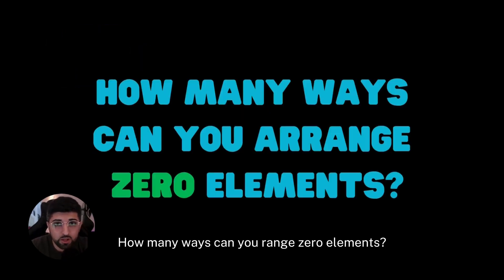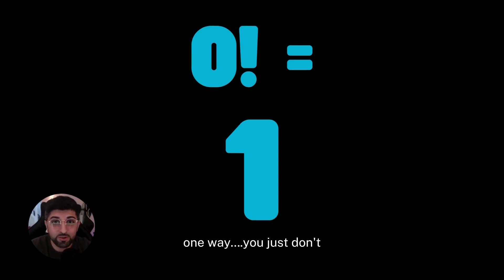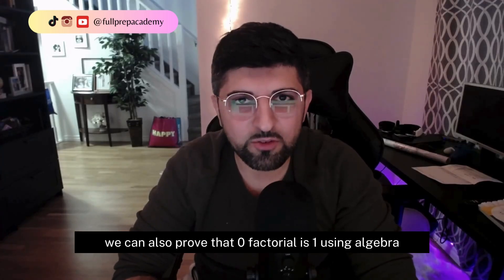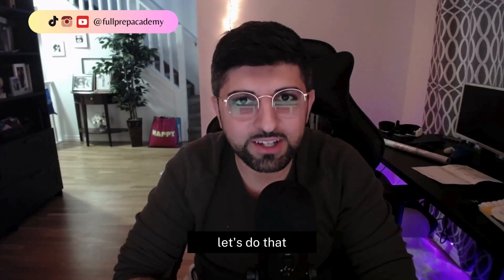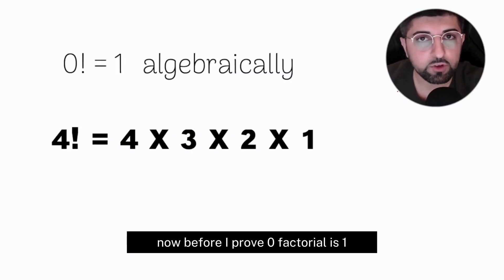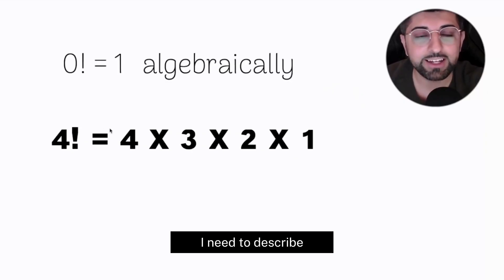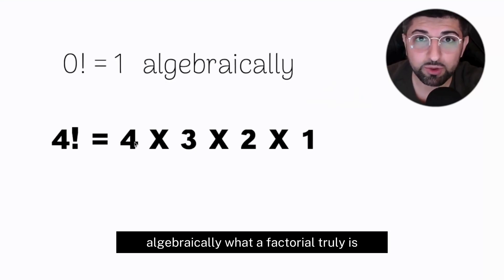How many ways can you arrange zero elements? One way. You just don't. We can also prove that zero factorial is one using algebra. Let's do that now. Before I prove zero factorial is one algebraically, I need to describe algebraically what a factorial truly is.